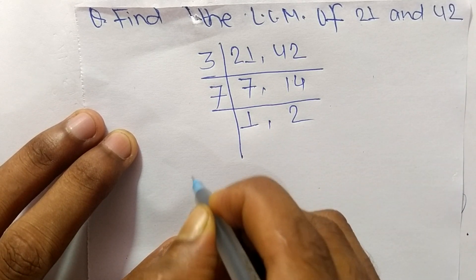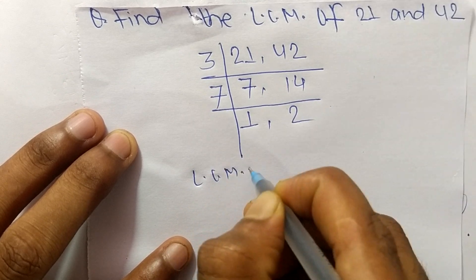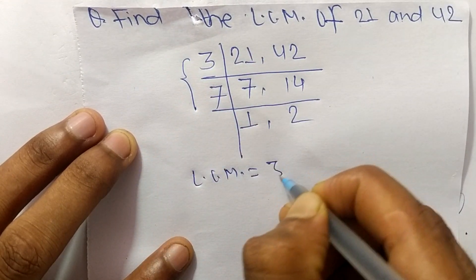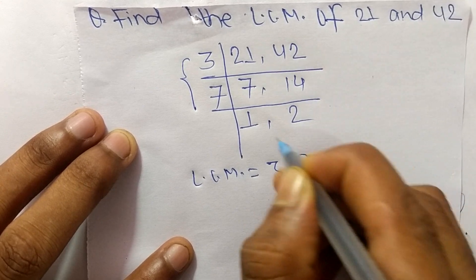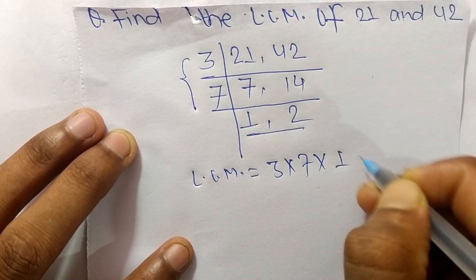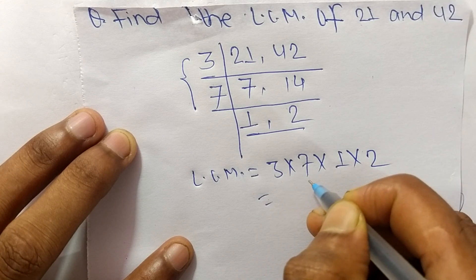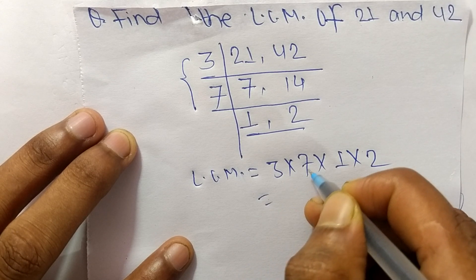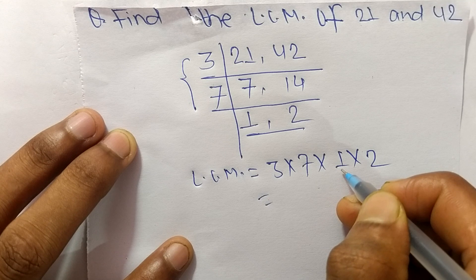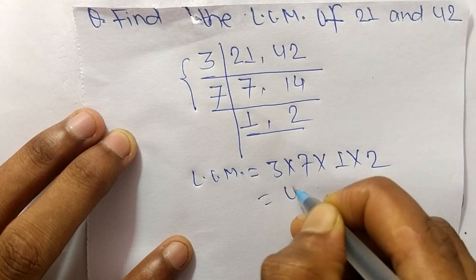So its LCM is equal to, from this part it is 3 times 7, and from this part it is 1 times 2. So 3 times 7 means 21, times 1 is 21, and 21 times 2 means it is 42.